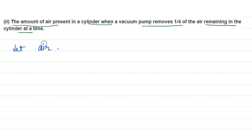Let air in cylinder is 100. When first time the pump removes, then 1/4 of 100 will go out. So 1/4 of 100 is 25. So 100 minus 25 is 75, the air present now.